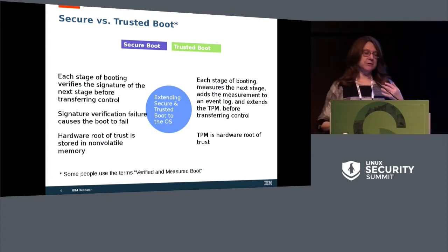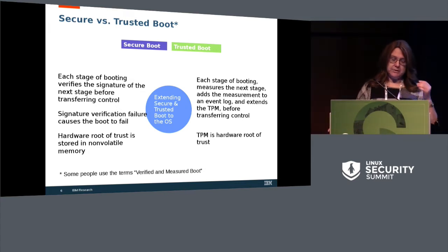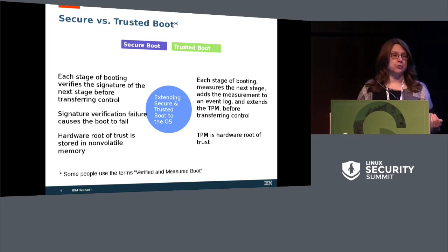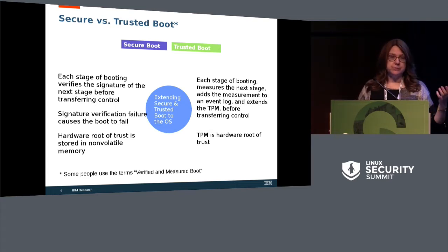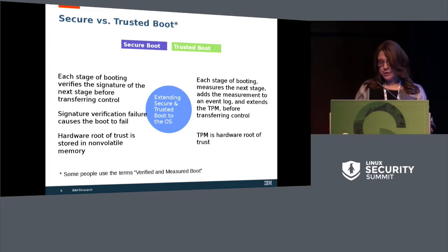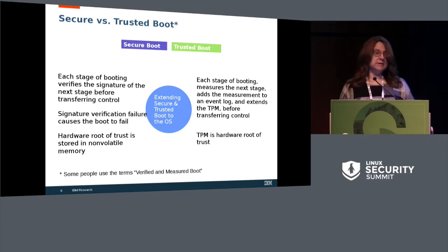These concepts aren't new. We've had the concept of secure and trusted boot for a while. In secure boot, each stage of booting verifies the signature of the next stage before transferring control, and what's included in the next stage might be keys. On signature verification failure, the boot fails. In the case of trusted boot, each stage of booting measures the next stage and adds the measurement to the event log. In the case of IMA, it's called the IMA measurement list, and it extends the TPM before transferring control to the next stage.